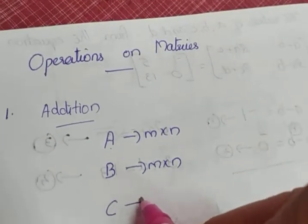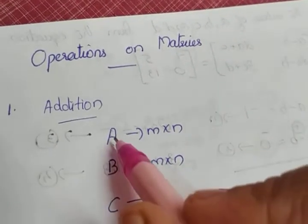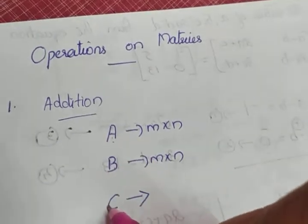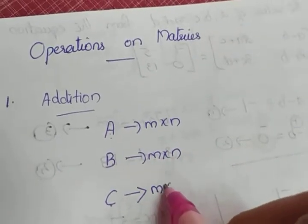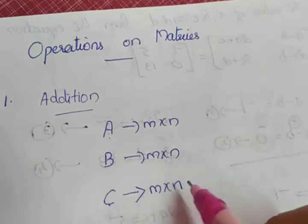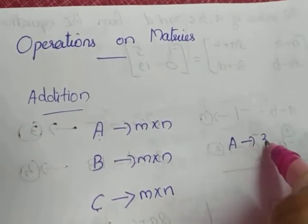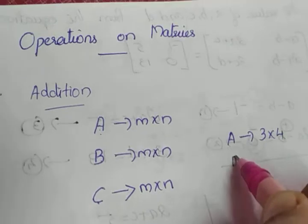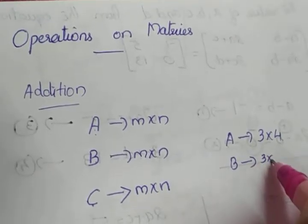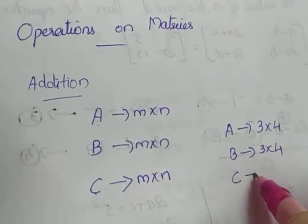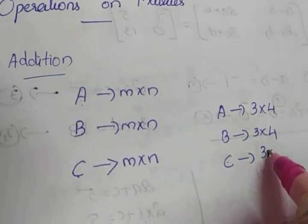We can add C also to the matrix. The only condition is that if we want to add A, B, and C, then C must also possess the same order — it must be of order M by N. For example, if A is a 3 by 4 matrix, then B must also be 3 by 4 to add A and B, and C must also be 3 by 4 if we want to add A, B, and C.